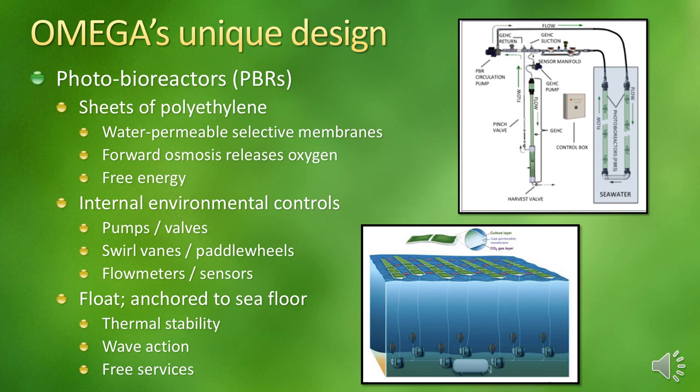This is a key component of the design: since oxygen is a byproduct of photosynthesis, the microalgae would suffocate in the PBRs if too much oxygen remained. Omega utilizes the free energy of forward osmosis to draw oxygenated water out of the tubes and release it into the ocean, increasing overall net productivity and energy efficiency. The PBRs also have internal environmental controls — pumps, swirl vanes, paddle wheels, flow meters, and sensors to monitor oxygen, CO2 levels, pH, and temperature. The tubes are shaped like a raceway so that water moves in a circular pattern through the pumps and sensors, and they float in the ocean but are anchored to the floor.